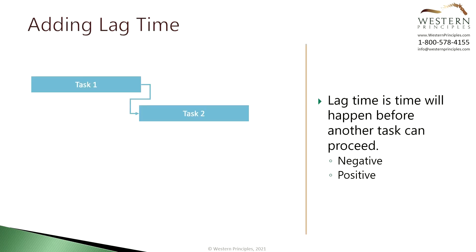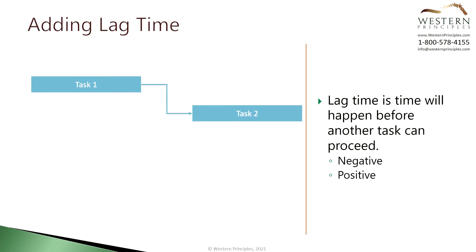Lag time is best described as wait time that's expected to happen before a task can begin. Lag time is normally accounted for in the duration of a finish-to-start relationship. For example, if you painted a wall and the paint was going to take eight hours to dry before you put the second coat on, you might put this in the relationship between tasks as lag time of eight hours. This pushes the next painting task out.